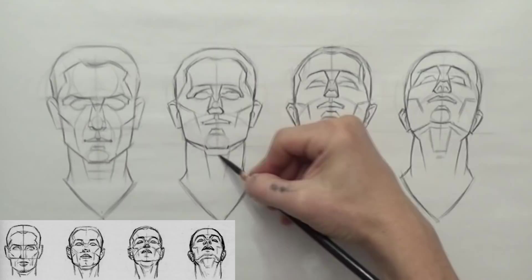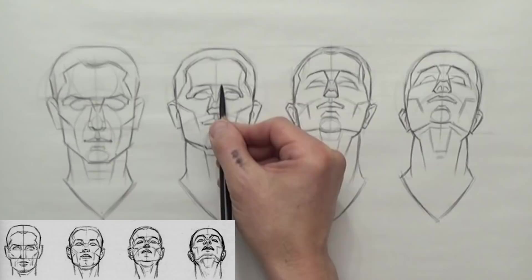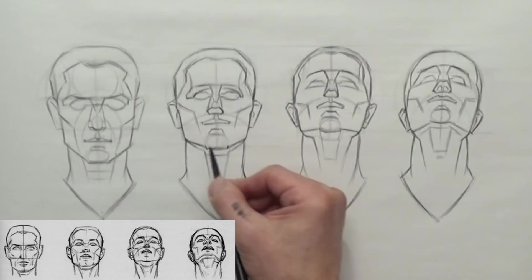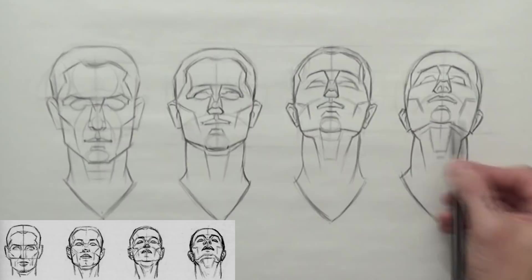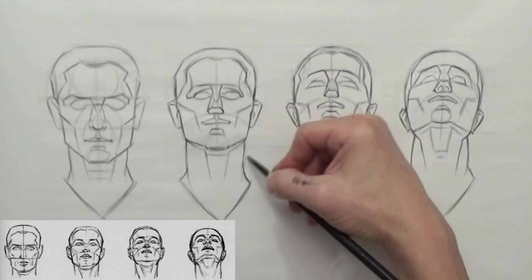So a couple things that happened, just to go over it again: looking straight on, everything's pretty straightforward. As we start to tilt backwards, things start to curve around. We can see under the nose more, under the jaw, under the chin. The ears start to drop down and so on. So I'm not crazy about this one. It's okay. I shouldn't be hard on myself. This is a tough one.